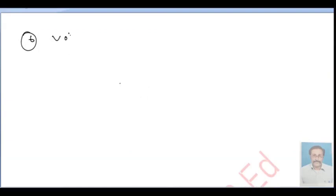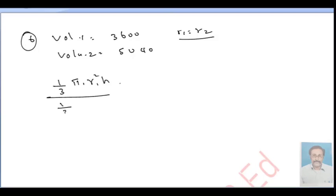Volume 1 is 3600, this is R1. R2, Volume 2 is 5040. Radius is same, so R1 is equal to R2. Volume 1 over Volume 2 is equal to 3600 by 5040, which equals H1 by H2.